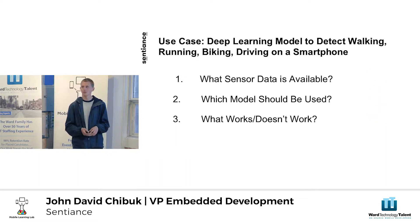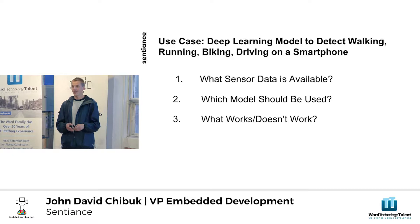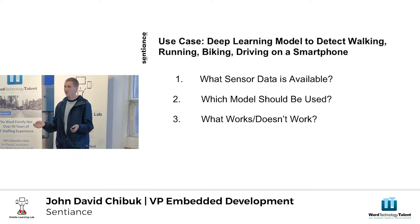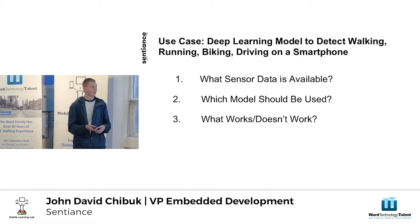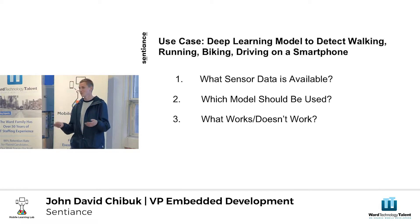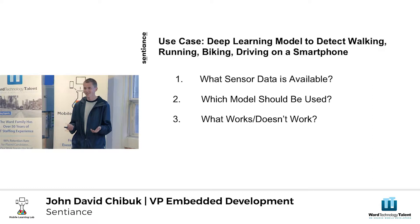I'm going to talk about a specific use case of understanding walking, running, driving, and biking with accelerometer and gyroscope data on a person's phone — what data is available, what model to use, and what does or doesn't work, because in machine learning there's always things that don't work. On your phone there are three main sensors.